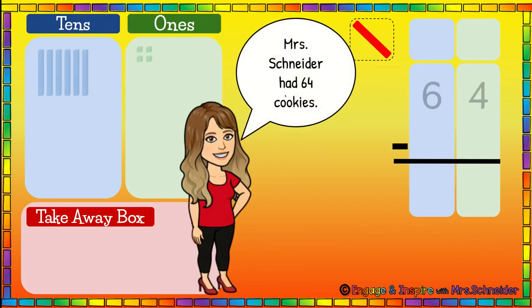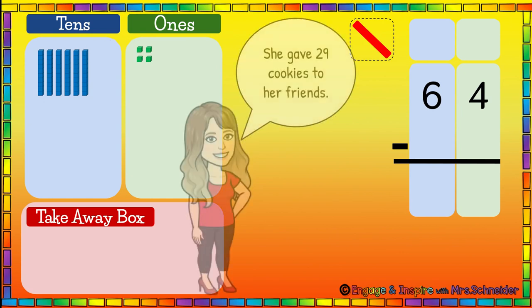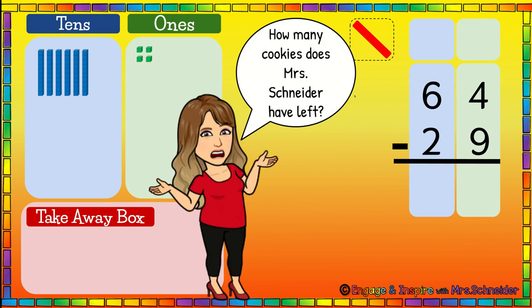Mrs. Schneider had 64 cookies — ten, twenty, thirty, forty, fifty, sixty, sixty-one, sixty-two, sixty-three, sixty-four. She gave 29 cookies to her friends, so we are going to take away 29. How many cookies does Mrs. Schneider have left? Well, that's the problem we are solving.